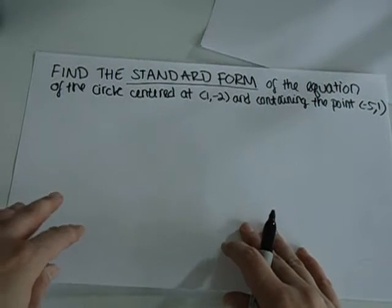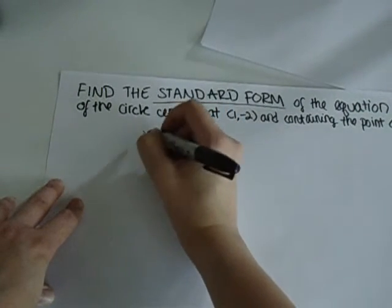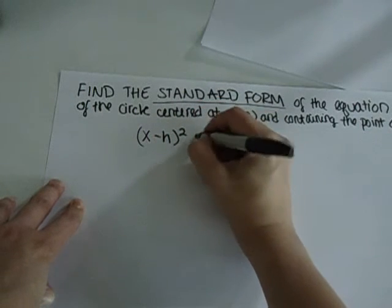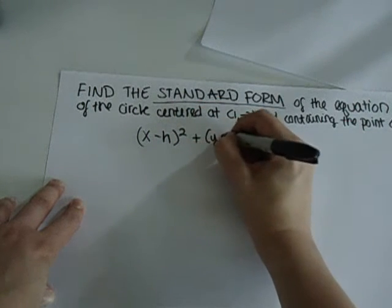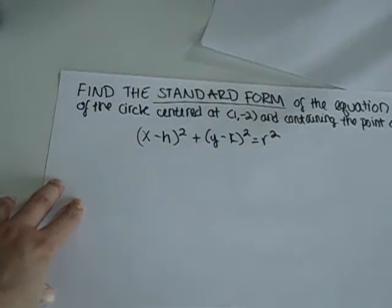And if you look at the standard form, you'll see there are variables of h and k that can be plugged in. So the standard form of the circle is (x-h)² + (y-k)² = r². So that's the standard form. That's what we want to get it into.